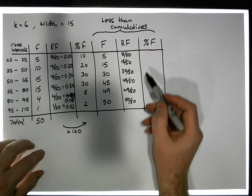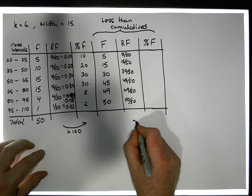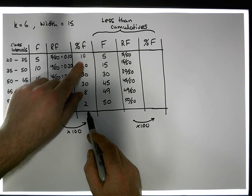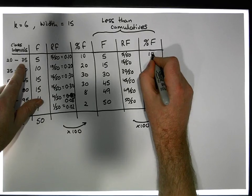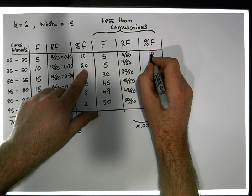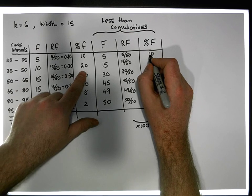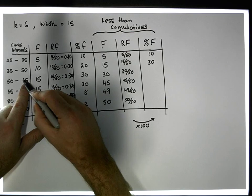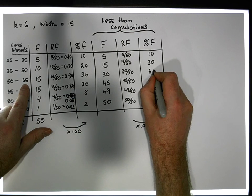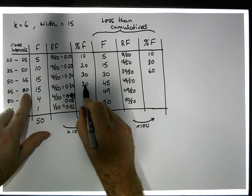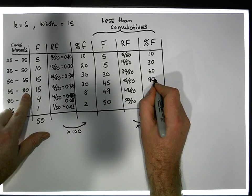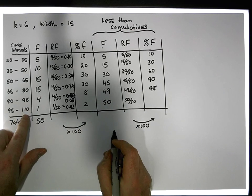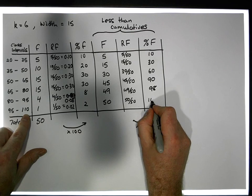We accumulate up our percentage frequencies. There's 10% less than 45. There's 20% in this interval and 10% before it, so 30% of the observations are less than 50. There's 40% in this interval plus 10% and 10% before, giving 60% less than 65. We add 30 onto 60 to give 90% less than 80, then add 8% to give 98% less than 95, and finally the remaining 2% gives us 100% less than 110.